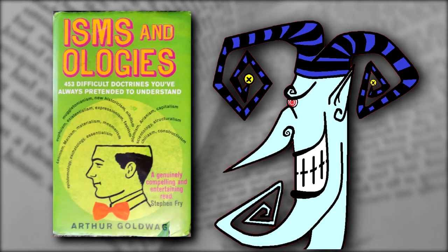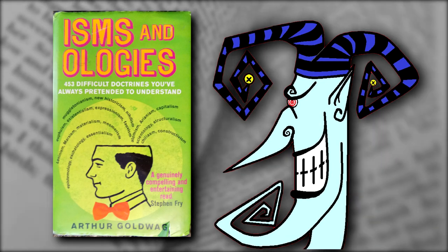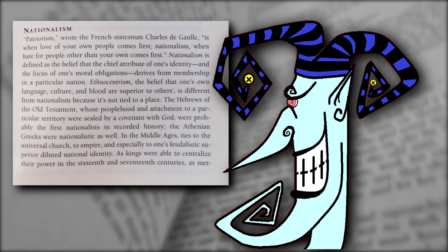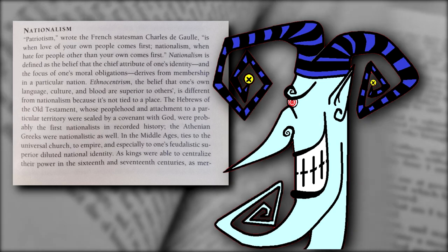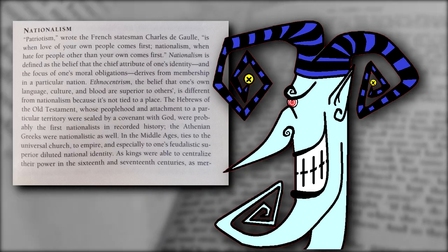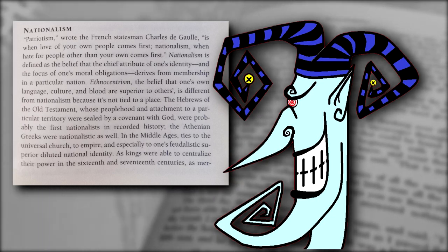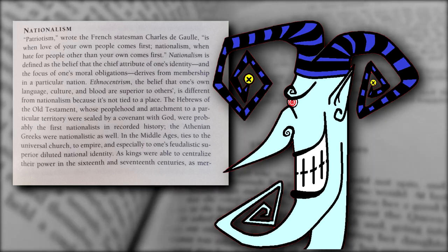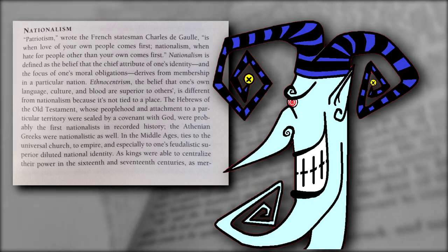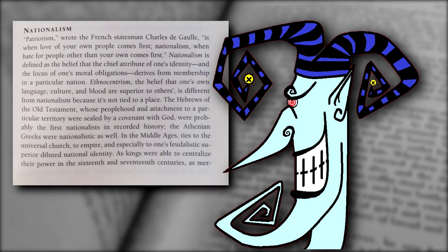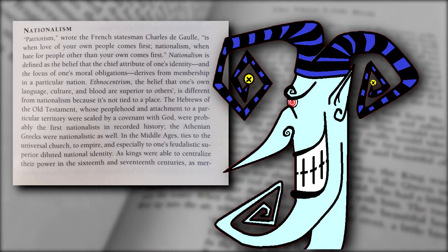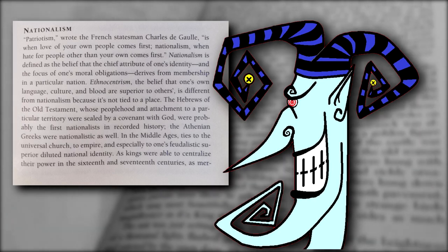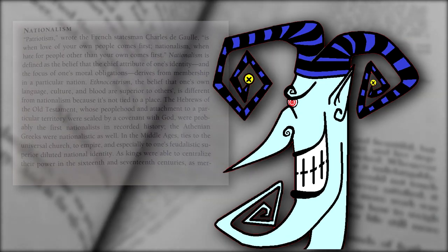I have this book on my shelf, 'Isms and Ologies' by Arthur Goldwag, published in 2007. Under nationalism, they write: French statesman Charles de Gaulle said, 'Patriotism is when love of your own people comes first. Nationalism is when hate for people other than your own comes first.' This may be at least one of the sources behind the growing trend to think of nationalism as a negative thing rather than synonymous with patriotism. The book also defines nationalism as 'the belief that the chief attribute of one's identity and the focus of one's moral obligations derives from membership in a particular nation.' Ethnocentrism — the belief that one's own language, culture, and blood are superior to others — is described as different from nationalism because it's not tied to a place.